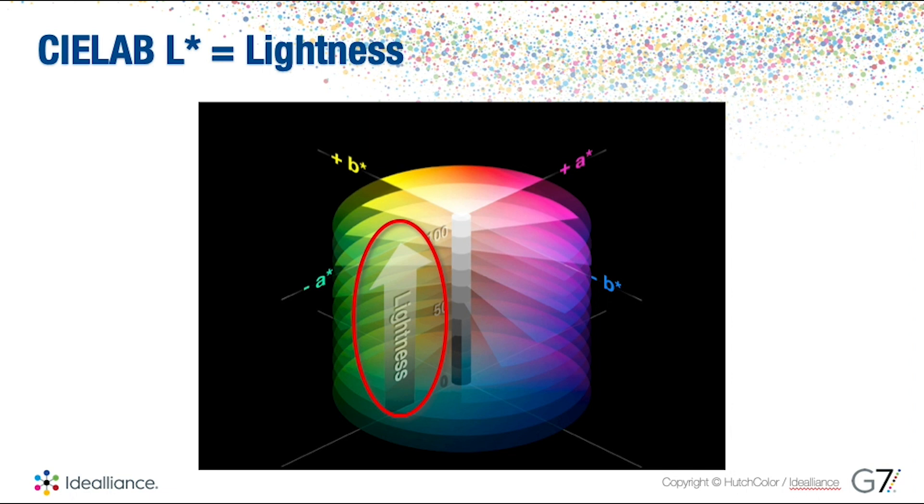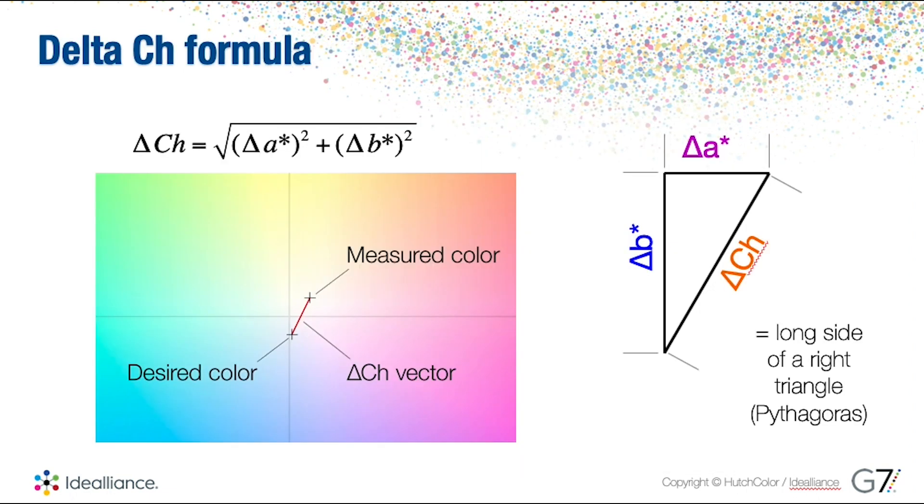Let's move on to delta CH. As I mentioned earlier when we were looking at Curve4, the delta CH is determining whether or not that CMY ramp is neutral or whether or not it's casting in a direction of one color or the other.